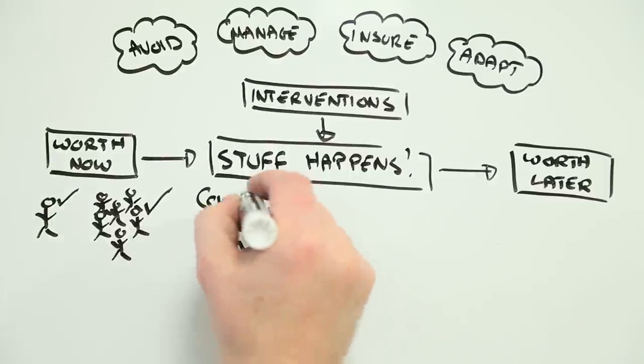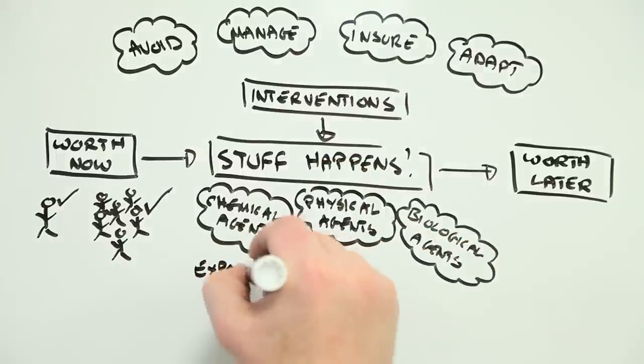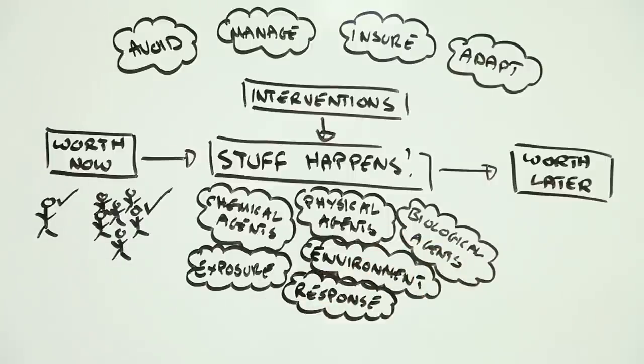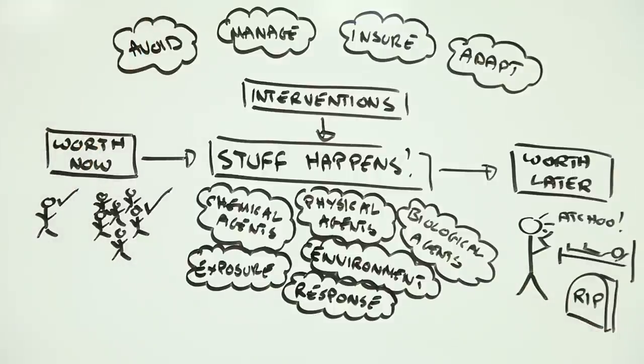That bad stuff is all the things that can adversely affect our health. The environment we live in, the stuff we're exposed to, the ability of our bodies to handle it. And the loss of worth is the impact on our health, whether it's as mild as a sore throat or as devastating as a terminal illness.